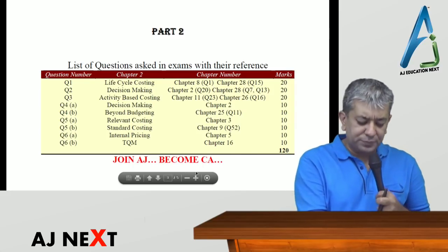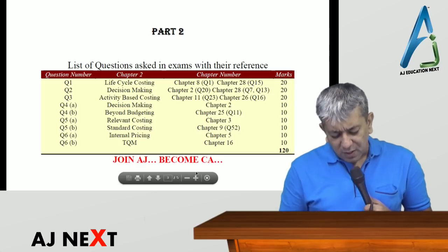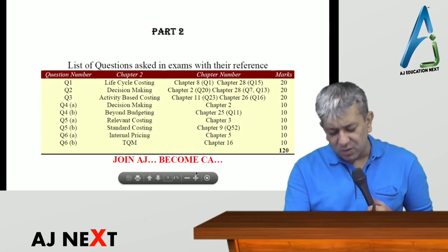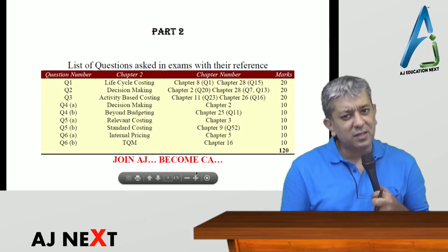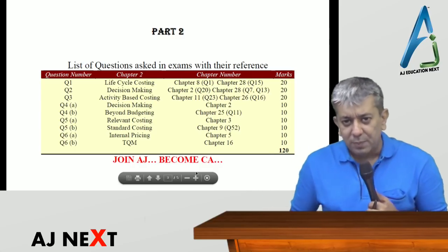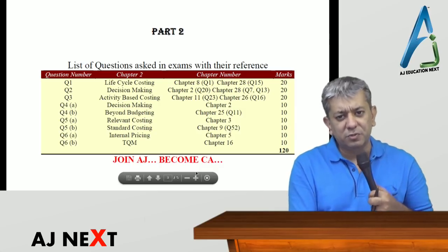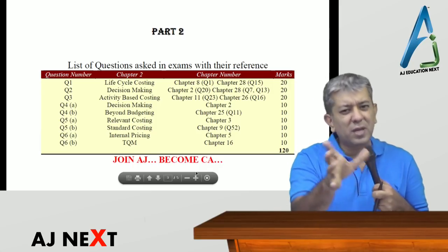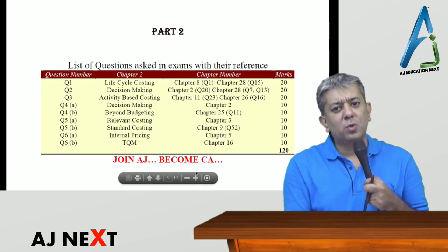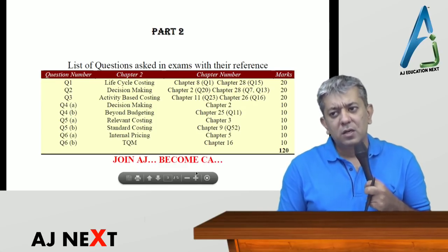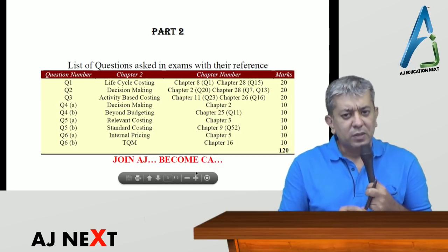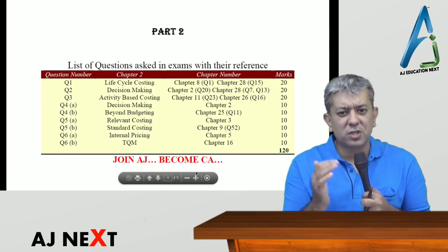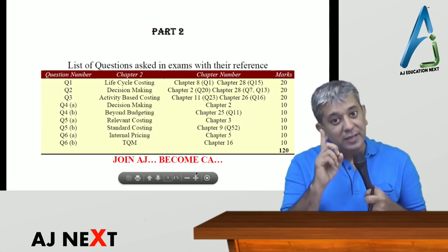Question number 4a was a very simple question — exactly word by word might not have done, lekin jaisi hi aap woh question dekhenge, sab kuch strike ho jayega. Wahan pe factory overheads tha jisko categorize karna tha into fixed and variable, phir total contribution nikaal ke yeh batao ki which is better — make or buy decision. Agar aap purchase karte ho, books of accounts ke hisaab se cost zyada aata hai, lekin agar aap fixed cost nikal do toh cost kum ho jaata hai. Yeh wala question 10 marks ke liye tha.